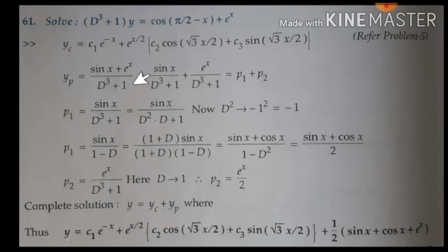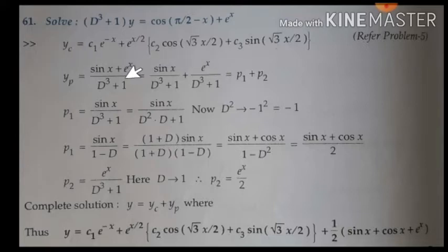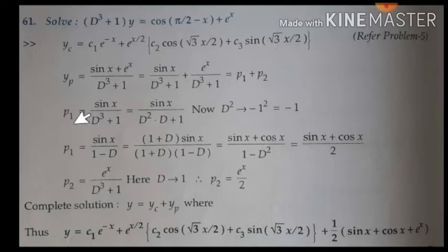Write it with the common denominator term, then separate it for the different functions: 1 by f(d) plus 1 into sin x, plus 1 by f(d) plus 1 into e to the power of x. Since we have a common denominator, let me take this as particular integral 1 (P1) and this as particular integral 2 (P2).